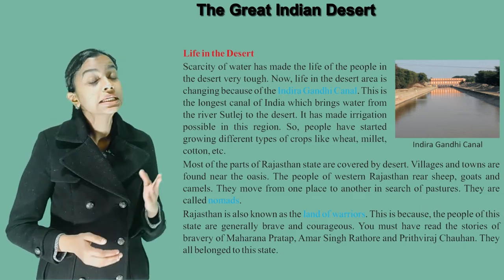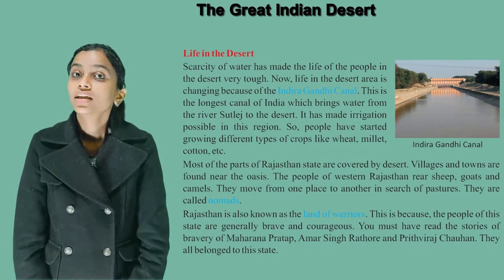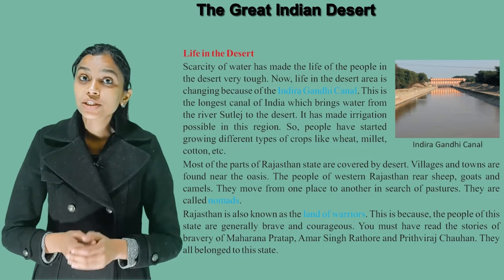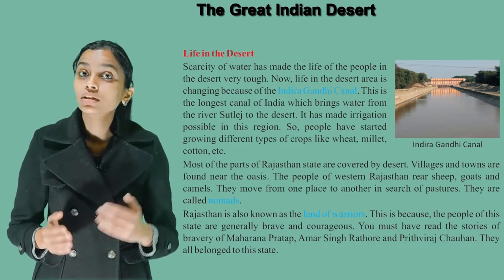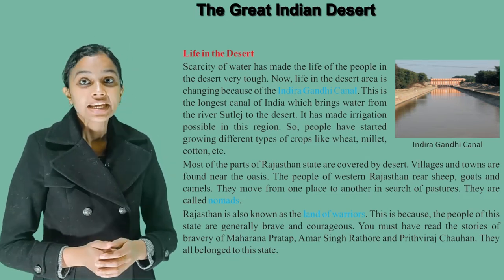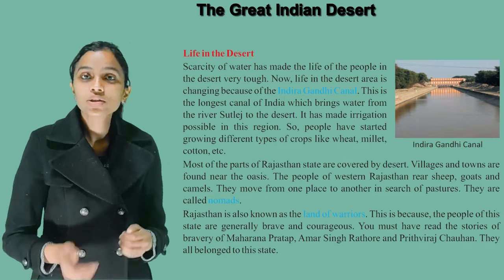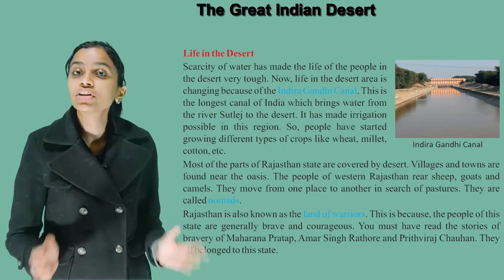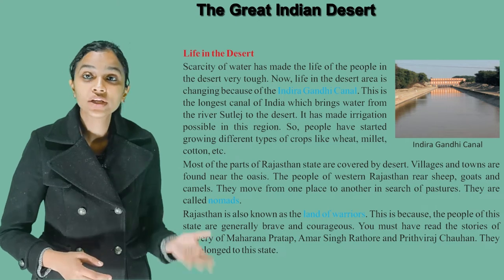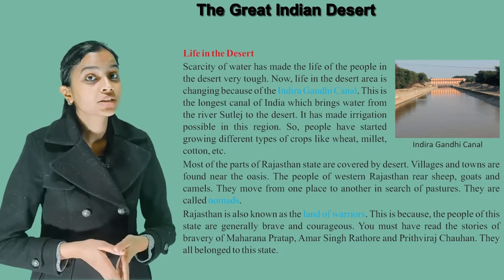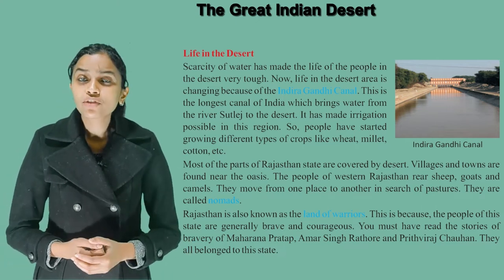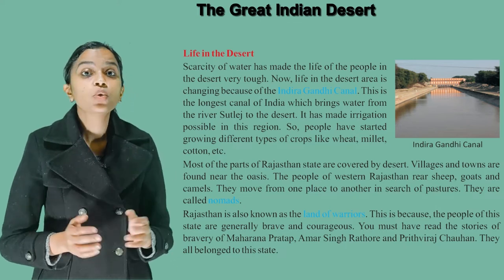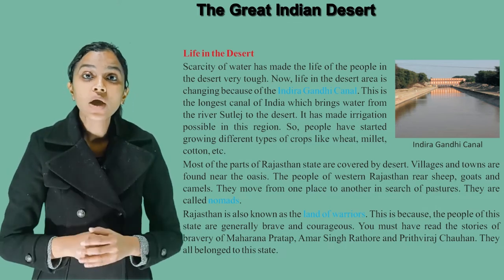Life is changing because of the Indira Gandhi Canal, the longest canal of India, which brings water from the river Sutlej to the desert. It has made irrigation possible in this region, so people have started growing different types of crops like wheat, millet, cotton, etc.